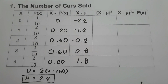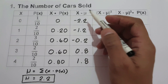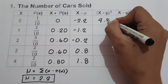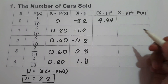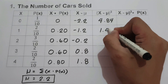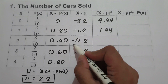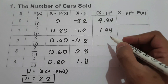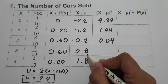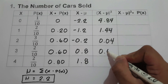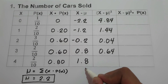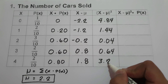The next step is to square each (x minus mean) value. Negative 2.2 squared is 4.84; negative 1.2 squared is 1.44; negative 0.2 squared is 0.04; 0.8 squared is 0.64; and 1.8 squared is 3.24.